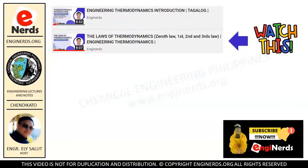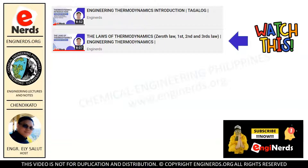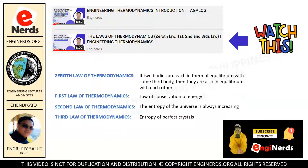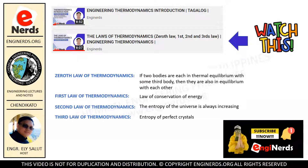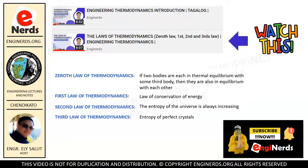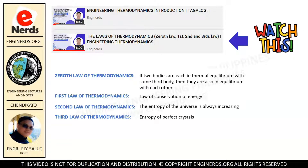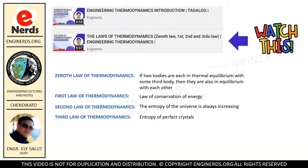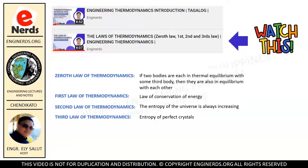To proceed on this subject, let us have a quick review of what we learned. The zeroth law of thermodynamics states that if two bodies are each in thermal equilibrium with some third body, then they are also in equilibrium with each other. The first law of thermodynamics is the law of conservation of energy. The second law states that the entropy of the universe is always increasing. And the third law of thermodynamics is about the entropy of perfect crystals.